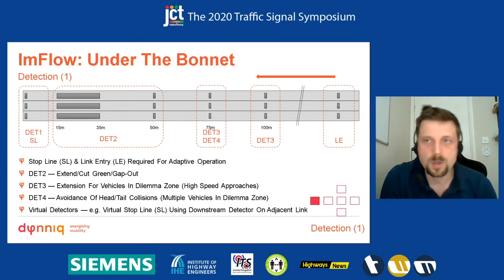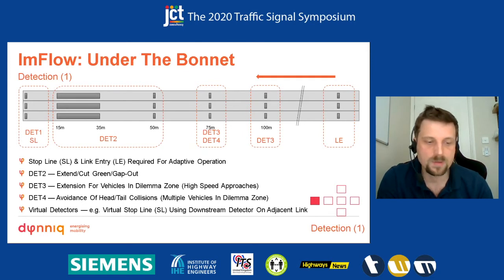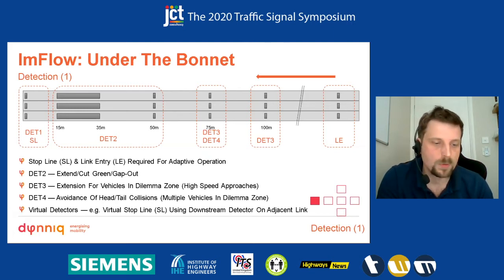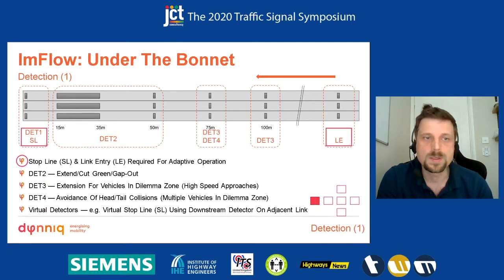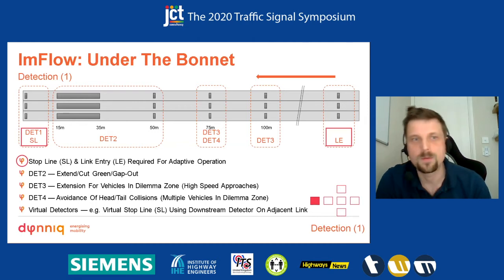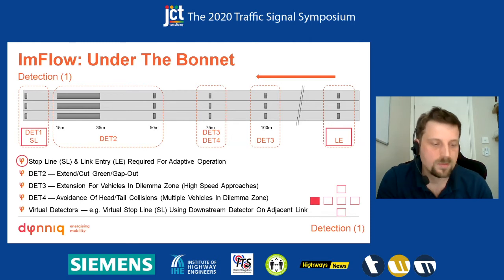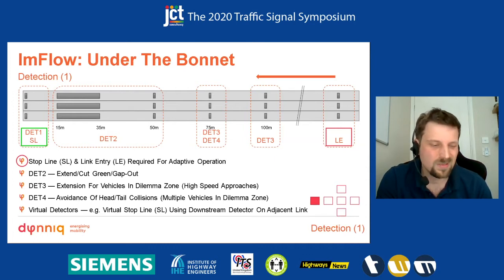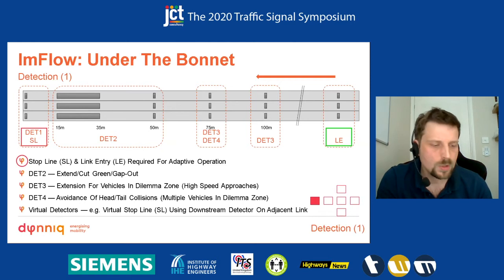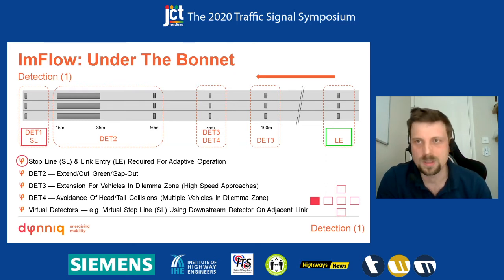One of the key discussion topics that comes up about Inflow fairly often is that of detection or detection requirements. Inflow supports a variety of different control modes and these have different detection requirements. For fully adaptive mode, the bare minimum you need is link entry and stop line detection - essentially you need to count the vehicles coming in and out of your link or approach. Adaptive mode, which is the main control method for Inflow, is essentially the planning predictive algorithm that implements your policies. It is actually possible to run without stop line detection - you can configure default saturation flows and turning percentages, but it's not truly adaptive in that sense. You can also run without link entry detection, but then Inflow has to drop down to actuated mode, which is essentially demand and extension - not adaptive or predictive.